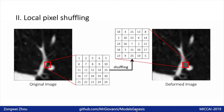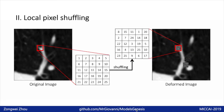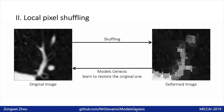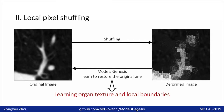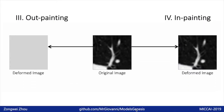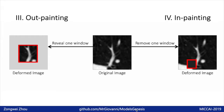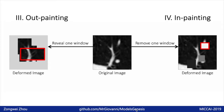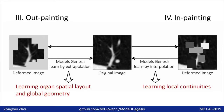Second, local pixel shuffling. We randomly shuffle the pixel positions within small regions and then let the model learn to recover the original image. By doing so, the model must learn the organ texture and local boundaries. We also have image out-painting and in-painting, where some small regions are hidden from the model by random numbers. In out-painting, to restore the original image, the model must learn from the organ spatial layout and global geometry by extrapolation. And in in-painting, the model must learn the local continuities of organs by interpolation.